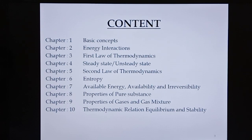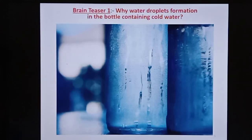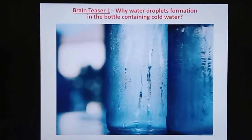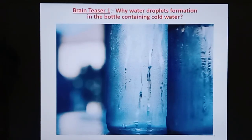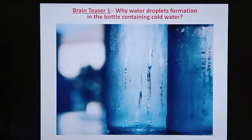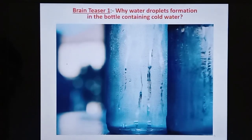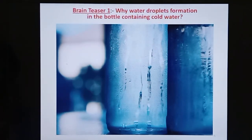We will cover the basic concepts of thermodynamics. Starting with a practical example: why does water droplet formation occur on a bottle containing cold water? The room is at 40 degrees Celsius and the cold water bottle is at 15 degrees Celsius. The outside water droplet formation happens immediately. Water vapor available in the atmosphere at 40 degrees Celsius comes in contact with the bottle at 15 degrees Celsius, and water droplets form as a deposit on the surface.